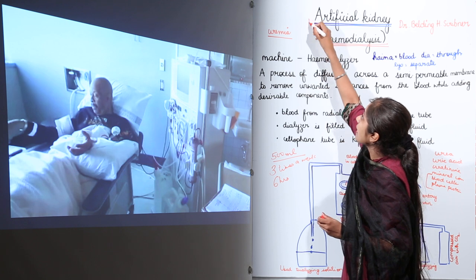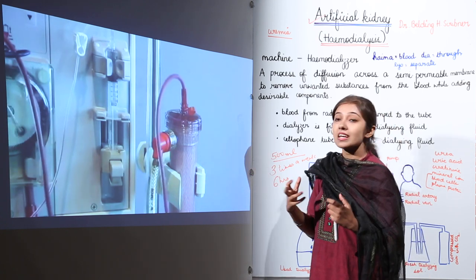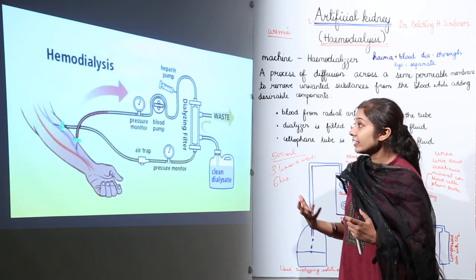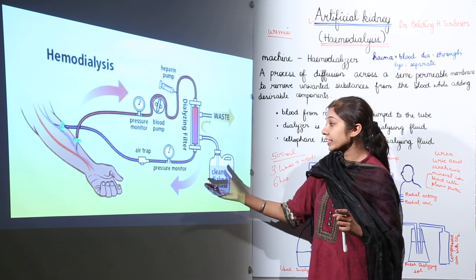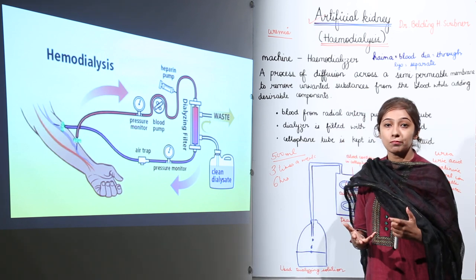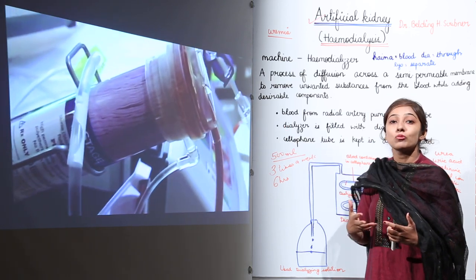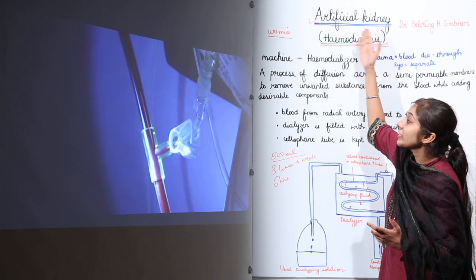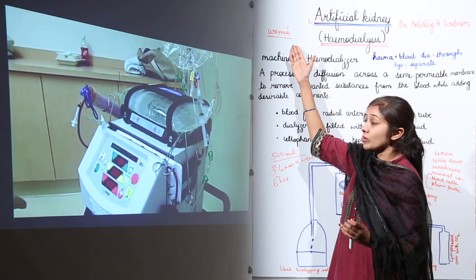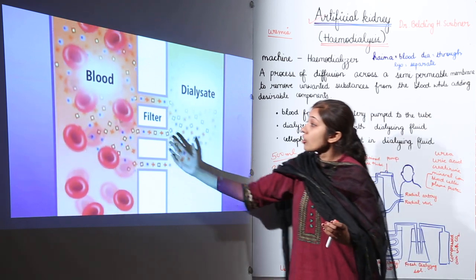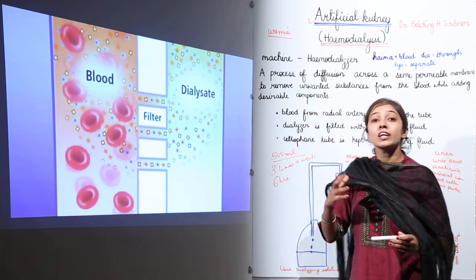You can see how the tube is attached to the radial artery of the patient, how the blood containing toxins is filtered, and the purified blood — free of toxic components — is returned to the patient through the radial vein. The toxic components removed include uric acid, urea, creatinine, and some mineral ions.